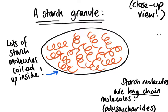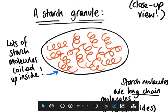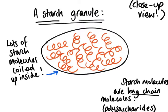This is a very close-up view — imagine you're looking through a microscope at a starch granule. What you'll see is a granule with lots and lots of molecules all curled up inside. Those molecules are starch molecules, and they are very long chain molecules — a polysaccharide. Many, many glucose units all joined together in a big chain, imagine they're all coiled up like little springs inside a granule.